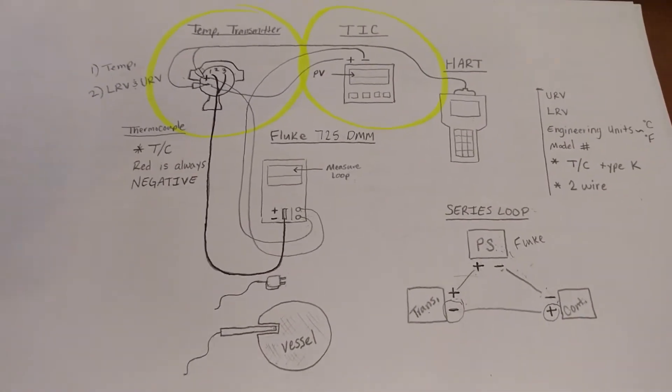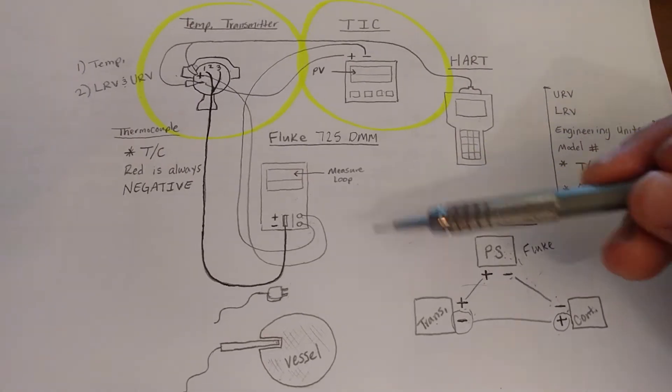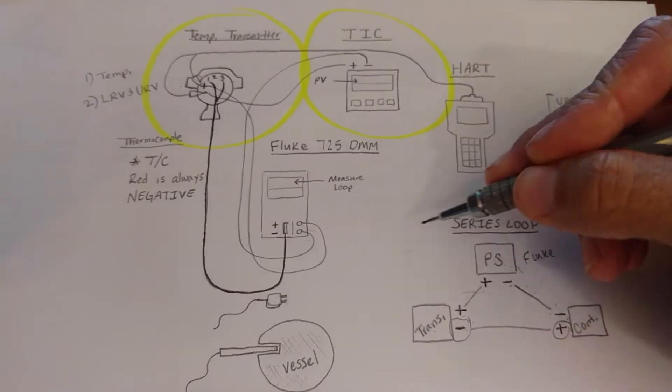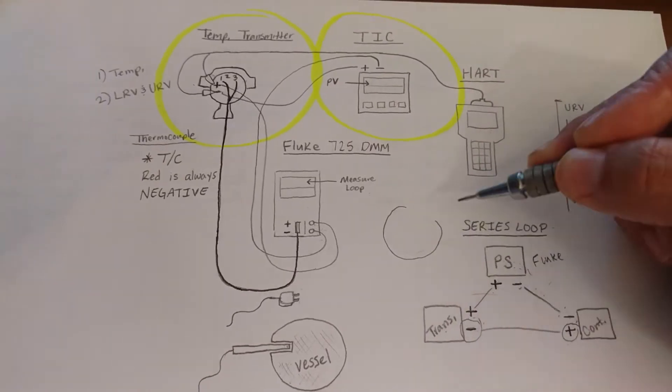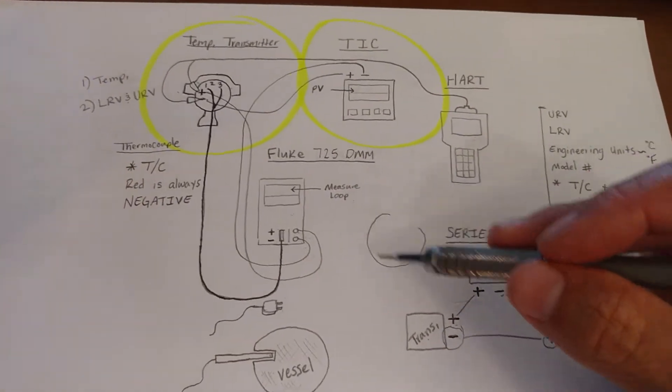What is a series loop? A series loop is a circle. And it's important to know that it is a completed circle, not an incomplete circle.